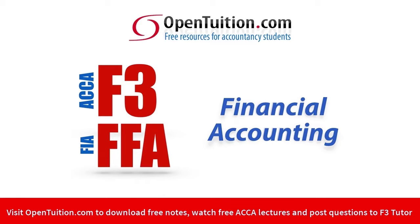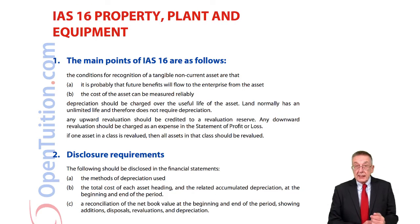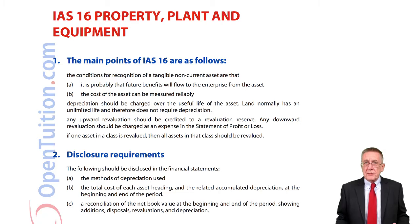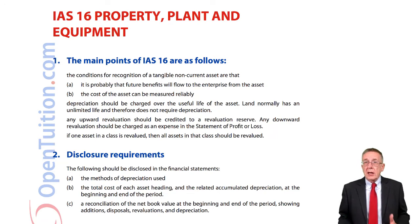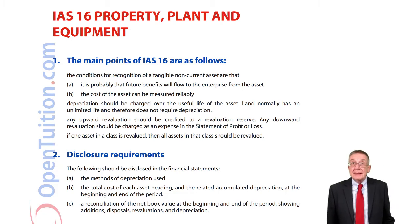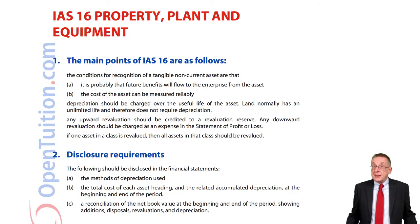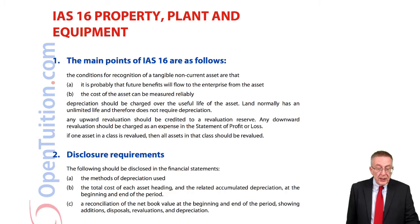This is a lecture from OpenTuition. To benefit from the lecture you should download the free lecture notes from OpenTuition.com. This is a very short lecture on accounting standard number 16, which gives the rules for accountants in relation to non-current assets — tangible non-current assets, property, plant and equipment. Although the standard itself is enormous, all you really need for your exam are the points that are on that page in the free lecture notes.